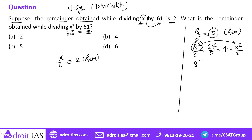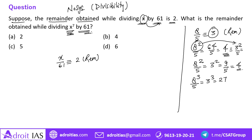Ideally, when 8² is divided by 5, the remainder should be 3², but 3² = 9, which is divisible by 5 one more time, giving remainder 4. For 8³ divided by 5, the remainder must be 3³ = 27, and 27 divided by 5 gives remainder 2. Checking directly: 8³ = 512, and 512 divided by 5 also gives remainder 2. Clear.